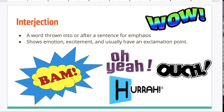The next to last part of speech is an interjection. What is it? Get ready. Yes, interjection. An interjection is a word thrown into or after a sentence for emphasis. It shows emotion or excitement and usually has an exclamation point. Here are some examples of interjections: Bam! Wow! Ouch! Oh yeah! Hurrah!